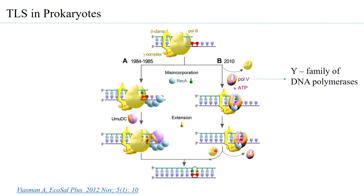Thereafter the beta clamp again takes up DNA POL-3 and synthesis is continued. It is only to handle the DNA lesion — to add any nucleotide against the thymidin dimer or any other DNA lesion — that DNA POL-5 is used. The specialist DNA POL-5 is able to add nucleotides to the bulky adduct which a normal replicating polymerase cannot do. This is why it is considered to be carrying out translesion synthesis — bypassing the adduct without repairing it.